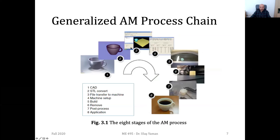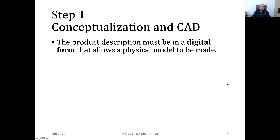We have eight main steps in the process chain: designing, conversion to a triangulation file like STL, conveying it to a CAM software, doing some setup, building it on the 3D printer, removing it, doing some post-processing and cleaning, maybe coating operations, and then using it in your application.